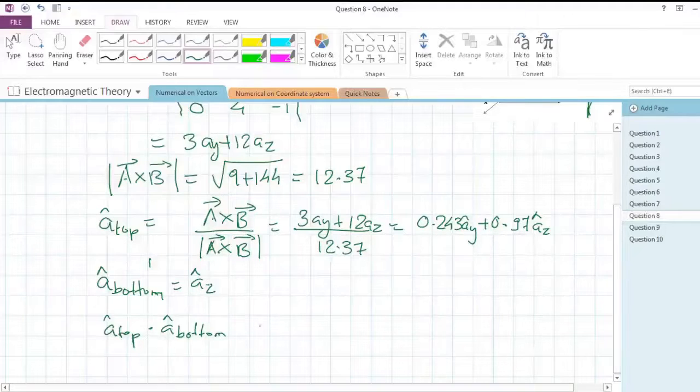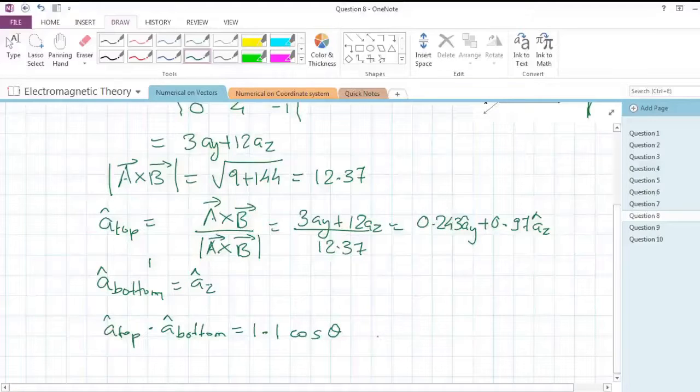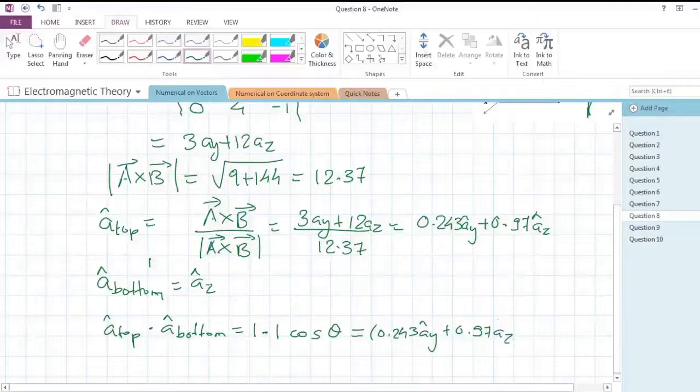We know that the magnitudes of unit vectors are one, so both will be one, and then we'll do cos theta, which is the angle between these two vectors that we need to find. It will be (0.243ay + 0.97az) · az.